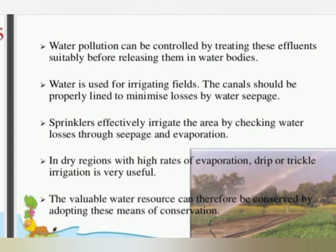Pollution can be controlled by treating effluents suitably before releasing them into water bodies. Water used for irrigating fields can be conserved by properly lining canals to minimize losses. Sprinklers effectively irrigate areas by checking water use. In dry regions with high rates of evaporation, drip or trickle irrigation is very useful. Valuable water resources can therefore be conserved by adopting these means. We have discussed the three important resources — water, land, and soil — which are very basic things that we see all around us.